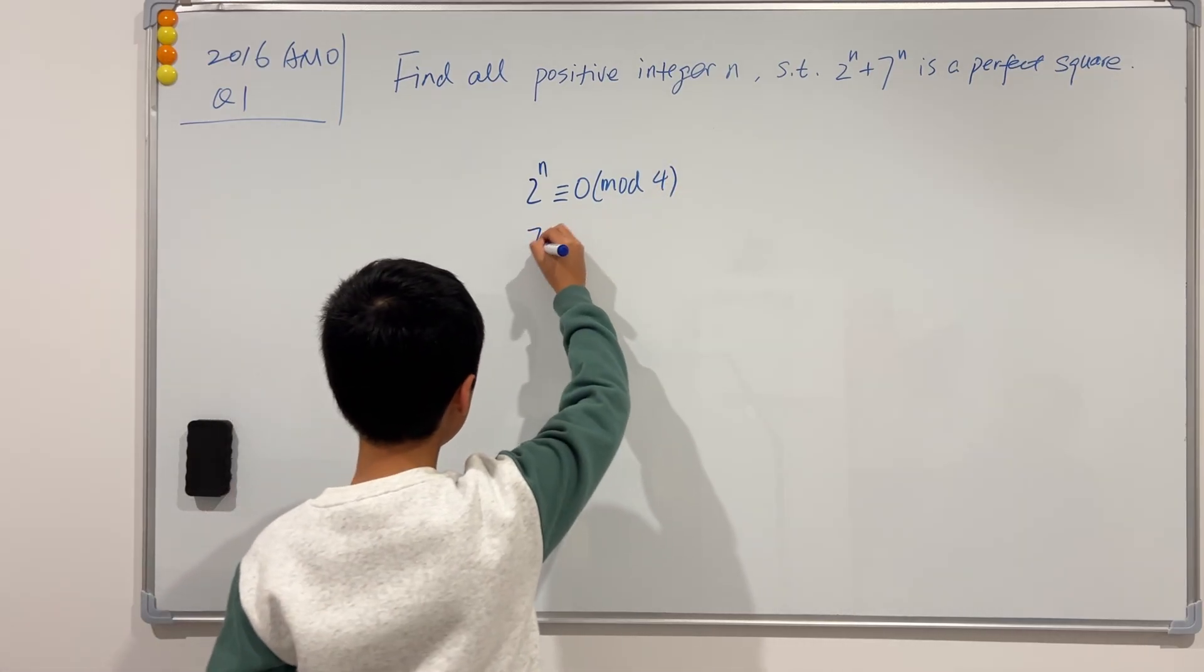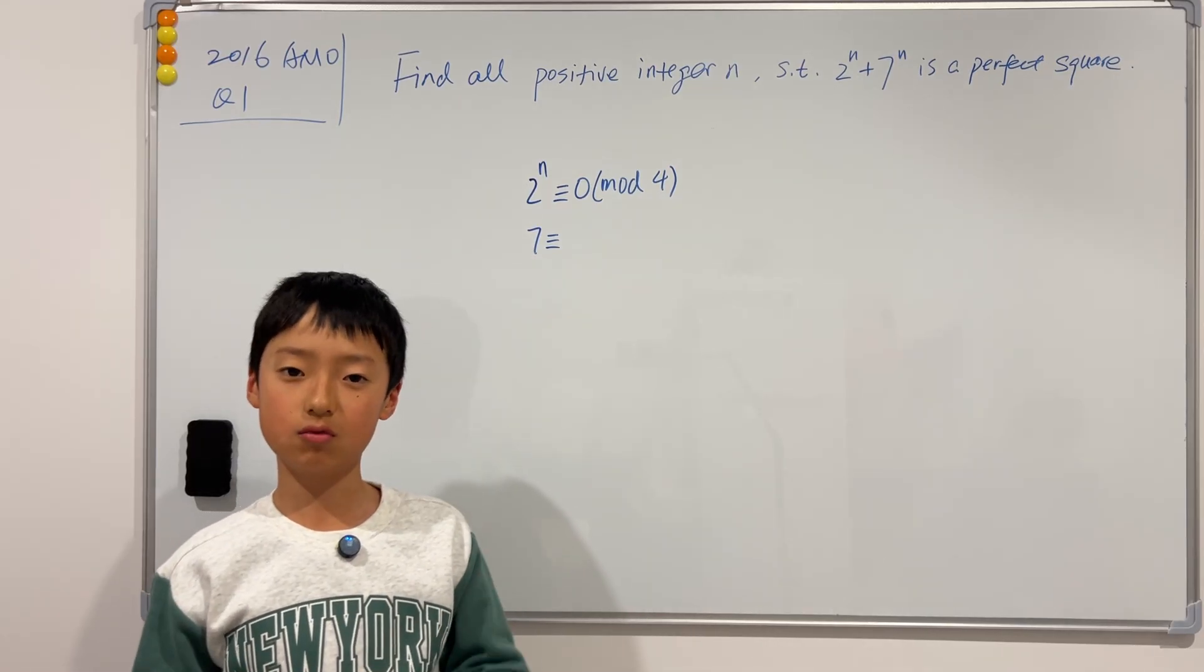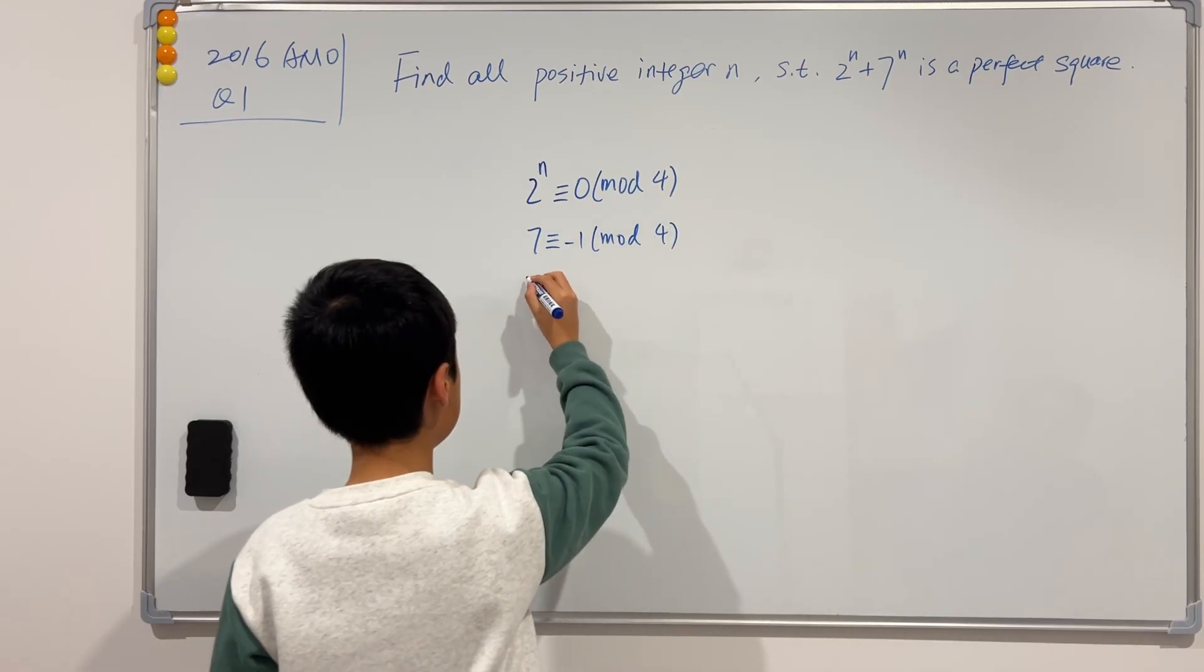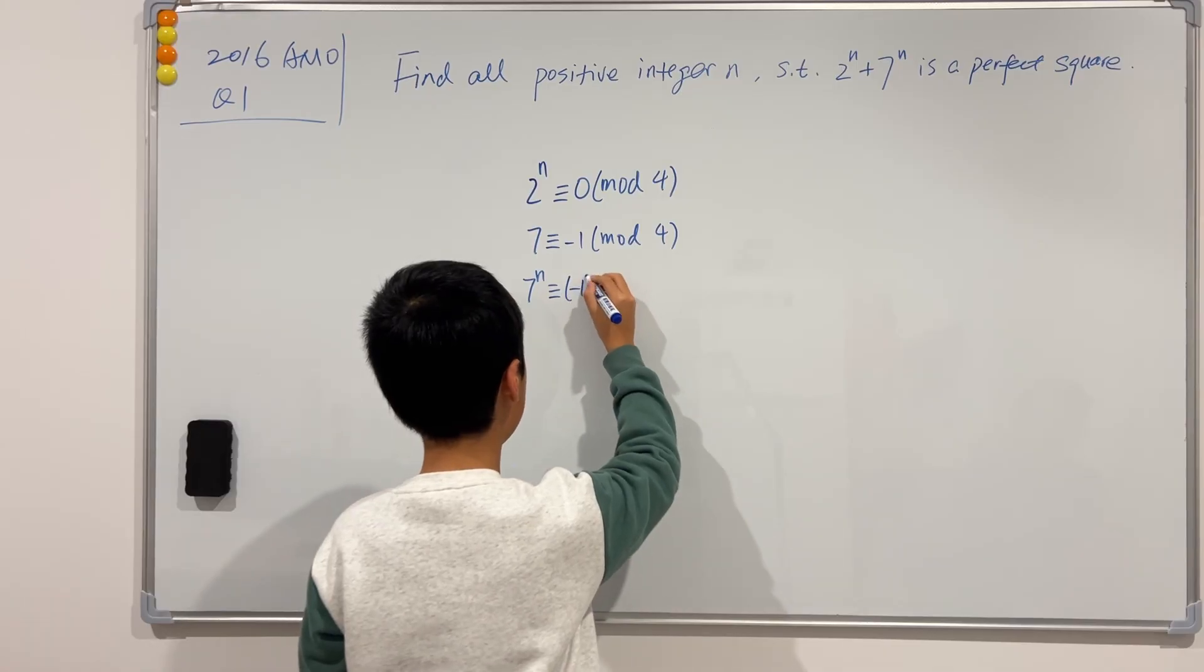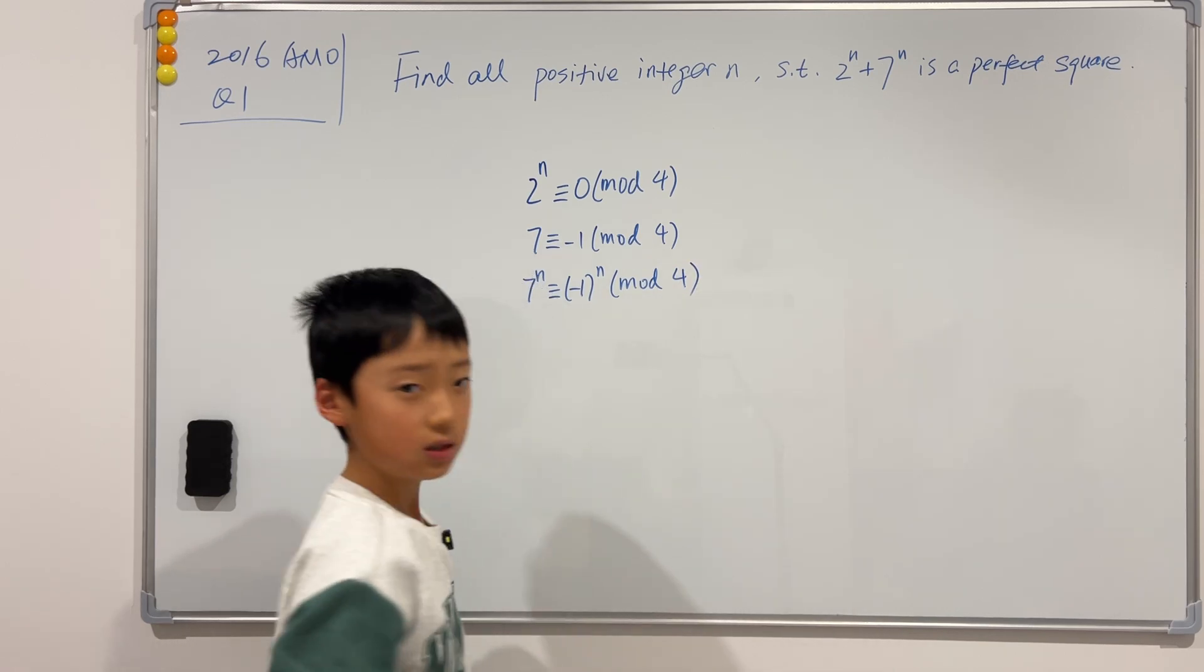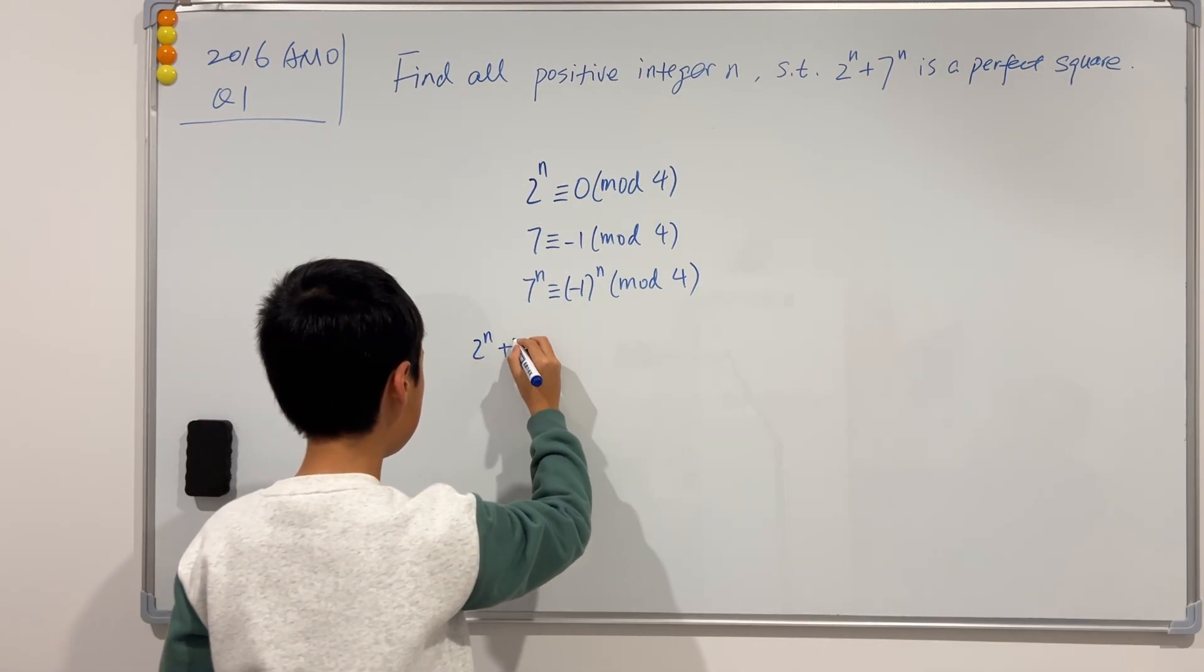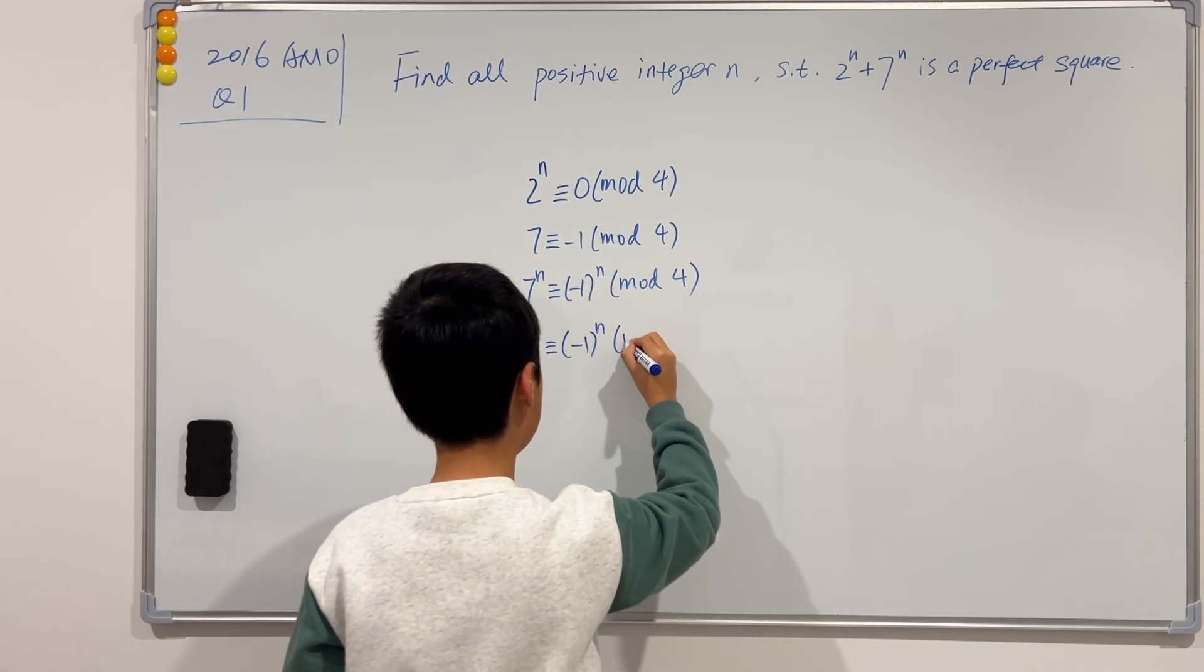And then we'll try 7 is congruent to 3 mod 4. But 3 is actually equivalent to negative 1. So you can see that 7 to the n will just be, we can raise this to the nth power, negative 1 to the power of n, mod 4. So now, I'm going to add these two together. So you can see that 2 to the n plus 7 to the n is congruent to negative 1 to the power of n mod 4.